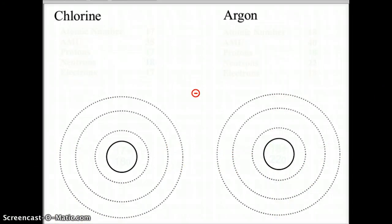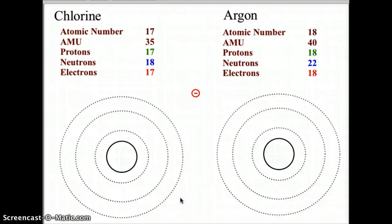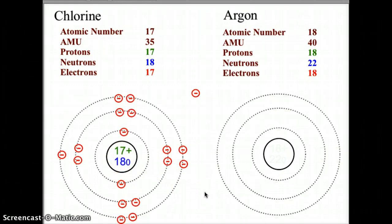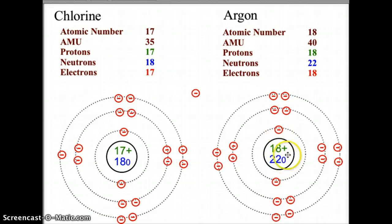Let's finish out the last two elements in the first three rows of the periodic table: chlorine and argon. Pause the video, complete both Bohr model drawings, then check your answers. For chlorine: 17 protons and 18 neutrons giving an AMU of 35, and 17 electrons arranged two in the first orbit, eight in the second, and seven in the third. For argon: 18 protons and 22 neutrons in the nucleus, with an electron arrangement of two, eight, and eight.